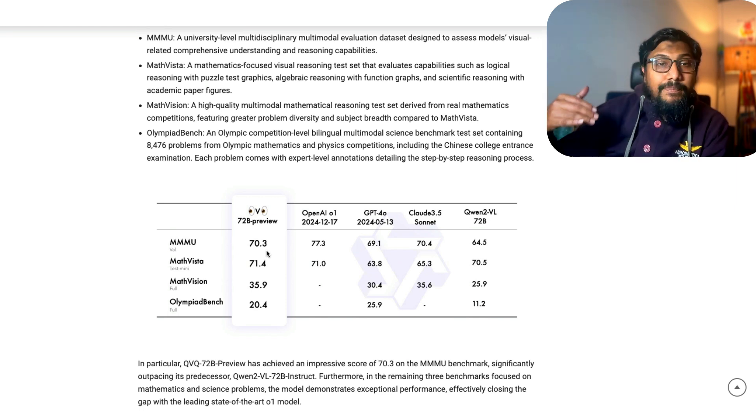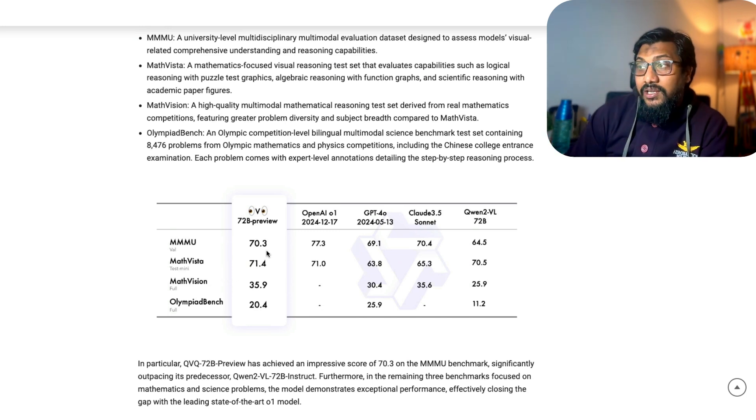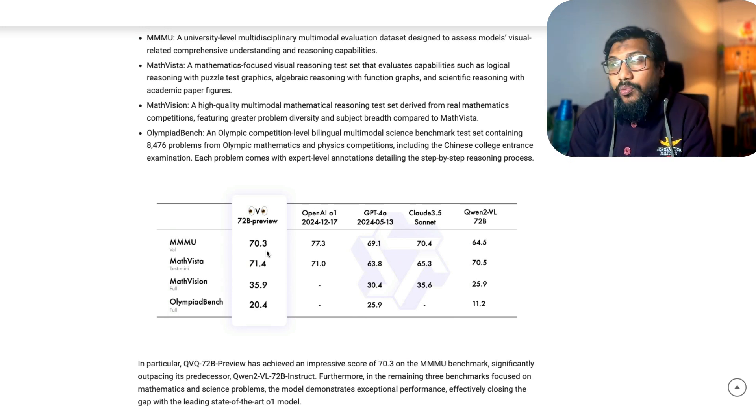If you see the other benchmarks like Math Vista for math problems, the QVQ model has scored 71.4, which is much better than Claude 3.5 Sonnet and the previous version of Qwen 2 VL 72 billion parameter model. Math Vision once again on par with Claude 3.5 Sonnet.